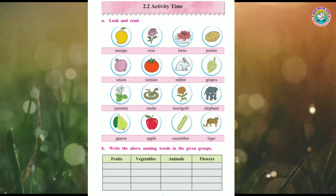The four groups are: first, fruits; second, vegetables; third, animals; and flowers. We will write each item down in its correct group.